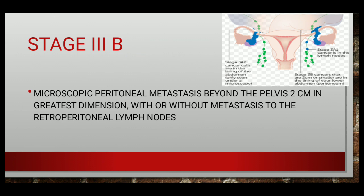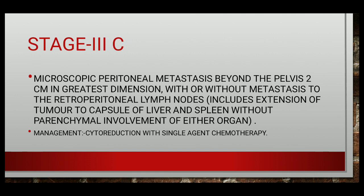In stage 3b, there is macroscopic peritoneal metastasis beyond the pelvis up to 2 cm in greatest dimension, with or without metastasis to retroperitoneal lymph nodes. In stage 3c, peritoneal metastasis is beyond the pelvis more than 2 cm in greatest dimension, with or without retroperitoneal lymph node metastasis, including extension of the tumor to the capsule of the liver and spleen without parenchymal involvement of either organ.